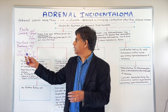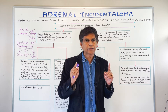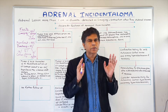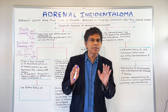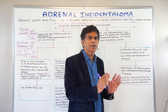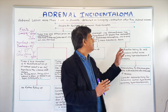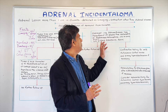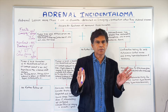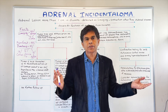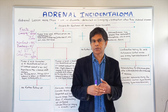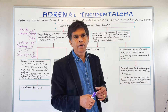We said only 2% are aldosterone-secreting tumors — very low. So we don't usually recommend testing for it unless the patient has hypertension and hypokalemia. In that case, you check the aldosterone-renin ratio — greater than 20 is concerning. Those are the things you have to do.